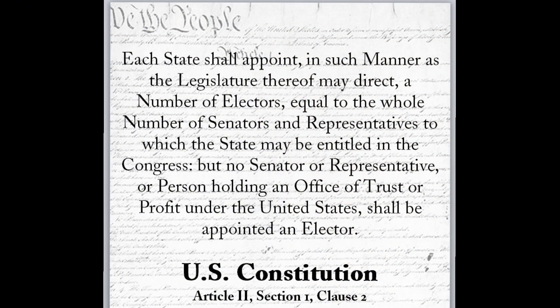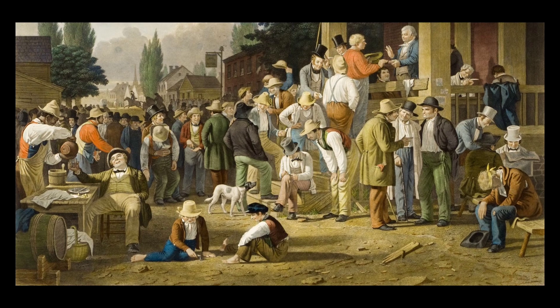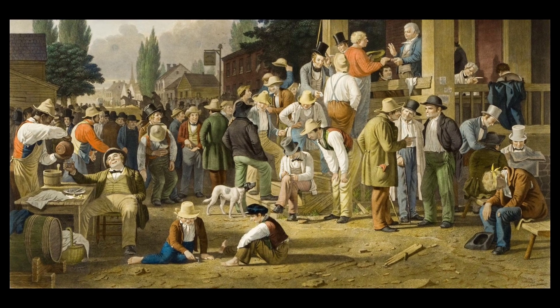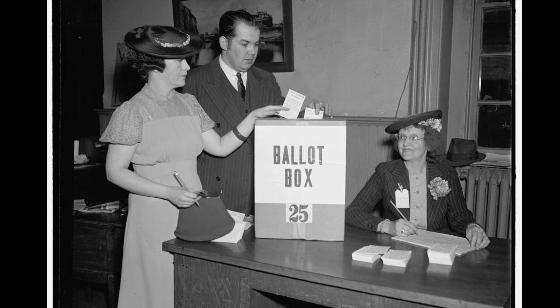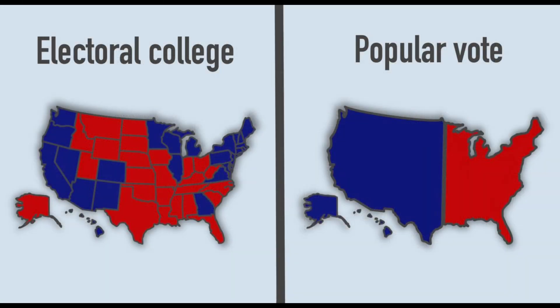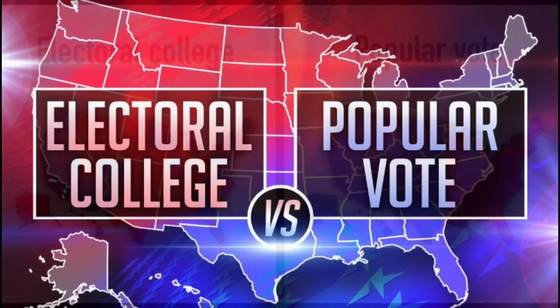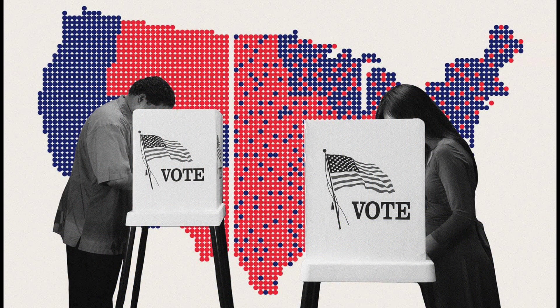As time went on, more states began allowing citizens to directly vote for electors. By the mid-1800s, most states had moved to a popular vote to determine which electors would cast their ballots for president. However, the formal election of presidents through the Electoral College continues today, even though the electors now nearly always reflect the popular vote in their respective states.